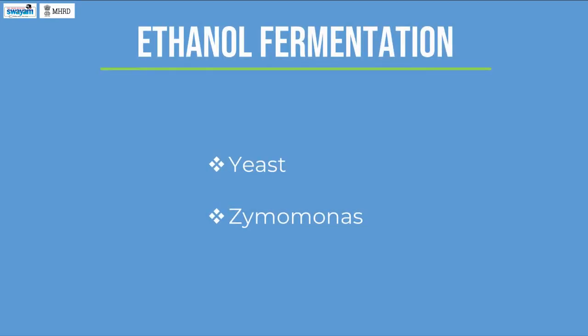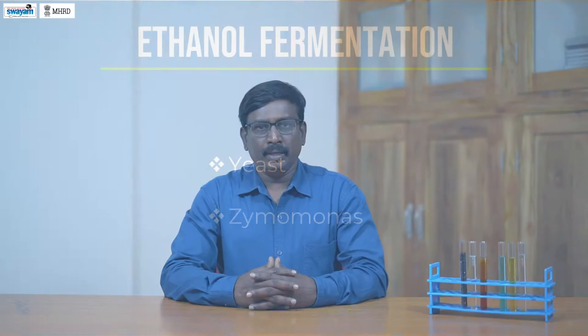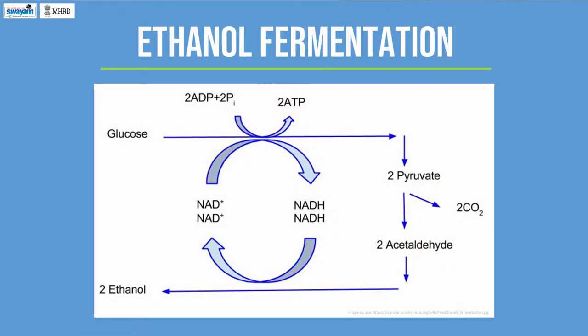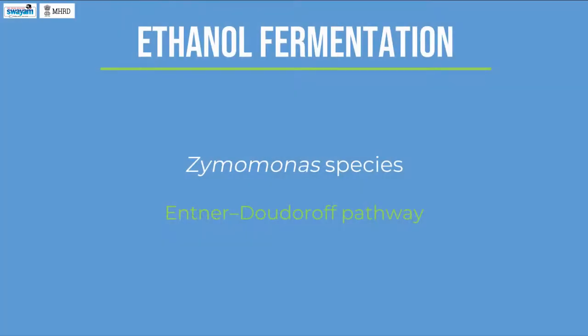Ethanol Fermentation. Yeast and Zymomonas species are the major microbes involved in ethanol fermentation. In yeast fermentation, pyruvate from the glycolysis pathway is decarboxylated to acetaldehyde and carbon dioxide in the presence of enzyme pyruvate decarboxylase. Acetaldehyde is then reduced to ethanol with NADH2. Zymomonas species uses pyruvate from the Entner-Doudoroff pathway, which is a major metabolic pathway in bacteria, converting glucose to pyruvate instead of glycolysis. The pyruvate is decarboxylated to acetaldehyde by pyruvate decarboxylase and reduced to ethanol using NADPH2.